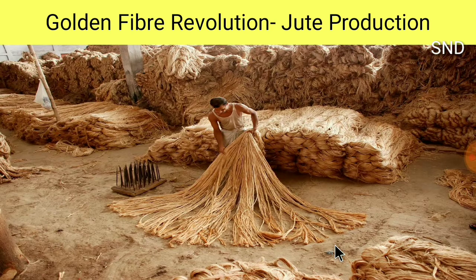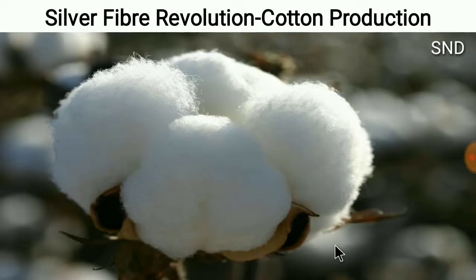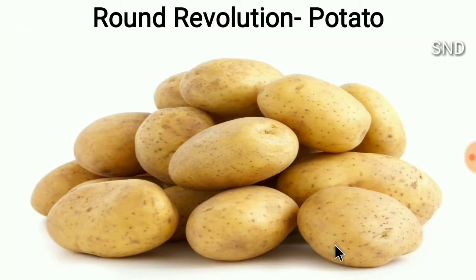Golden Fiber Revolution is about jute production. Silver Fiber Revolution is related with cotton production. Round Revolution is related with potato production.